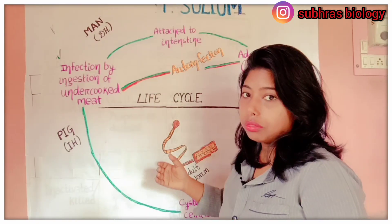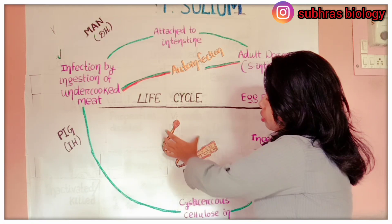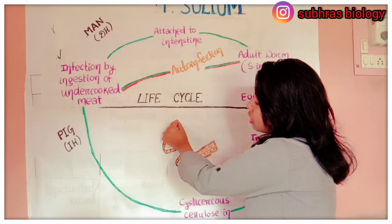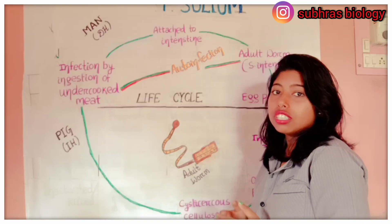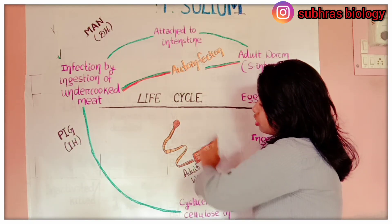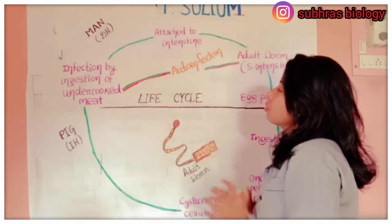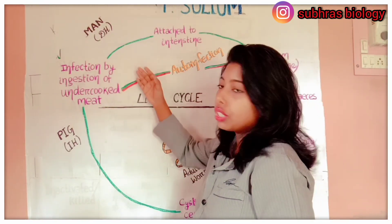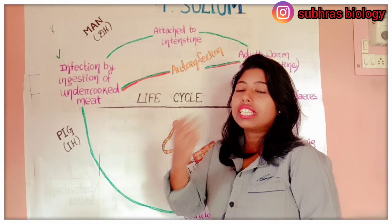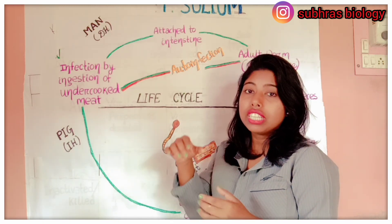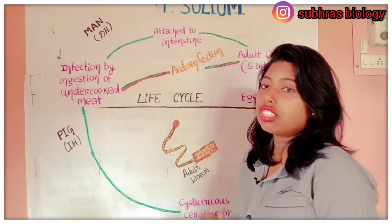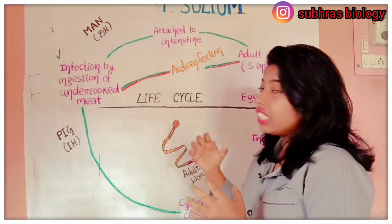The adult worm — the adult Taenia solium — has a structure including the head region, otherwise called the scolex, and the proglottid region. When this Taenia solium enters the human body, it attaches to the intestine. When we eat something, it moves through the esophagus and finally reaches the intestine, where it attaches using suckers present in the scolex region.